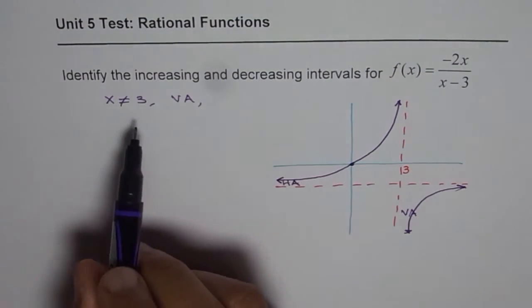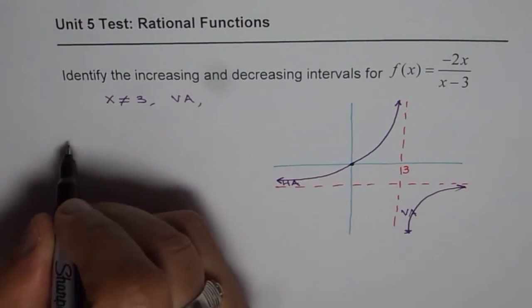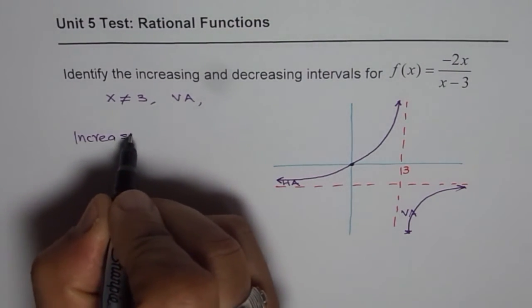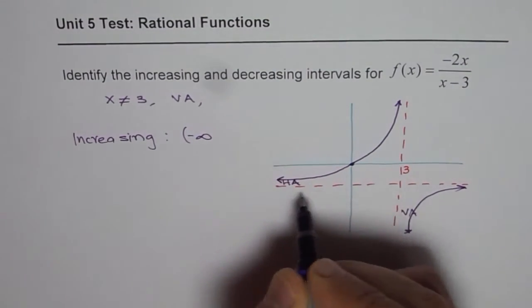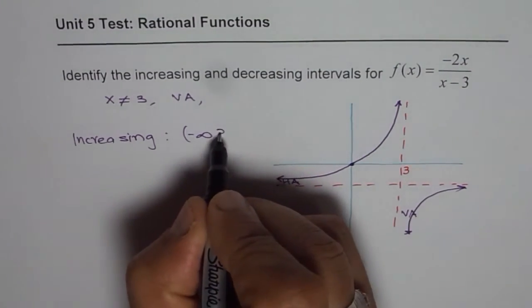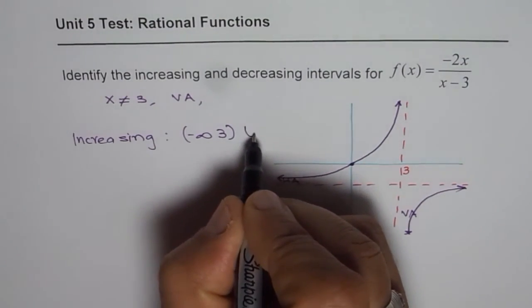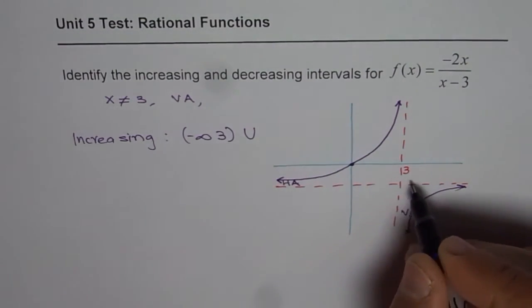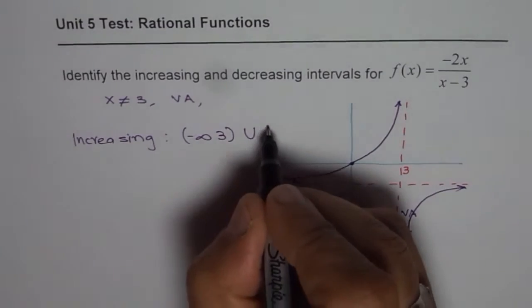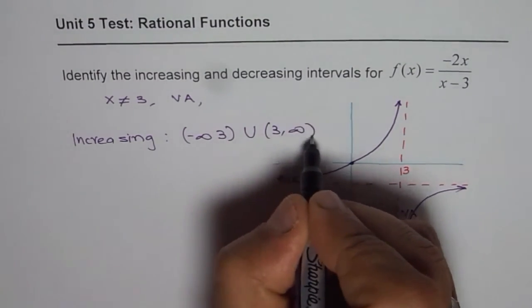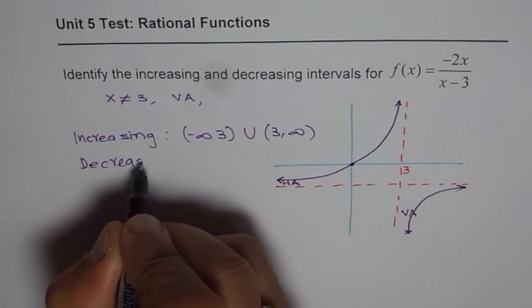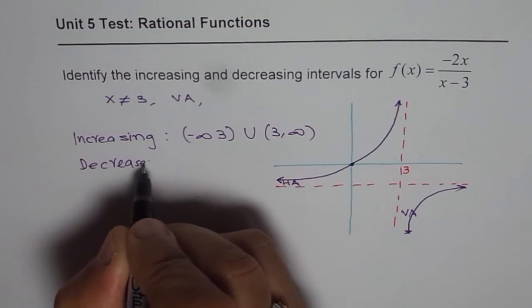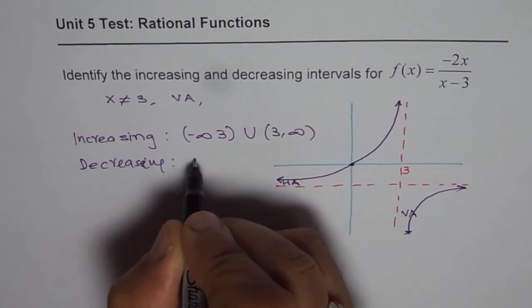So the interval of increasing is from minus infinity to 3. Never include 3 in this. Union it is further increasing from 3 to infinity. An interval of decreases, you can say decreasing is none.